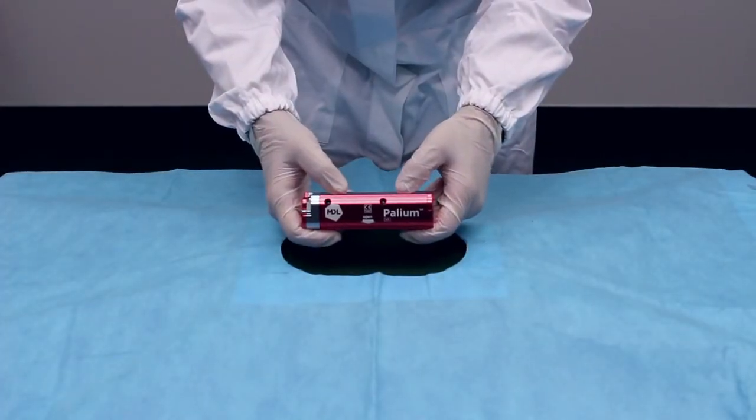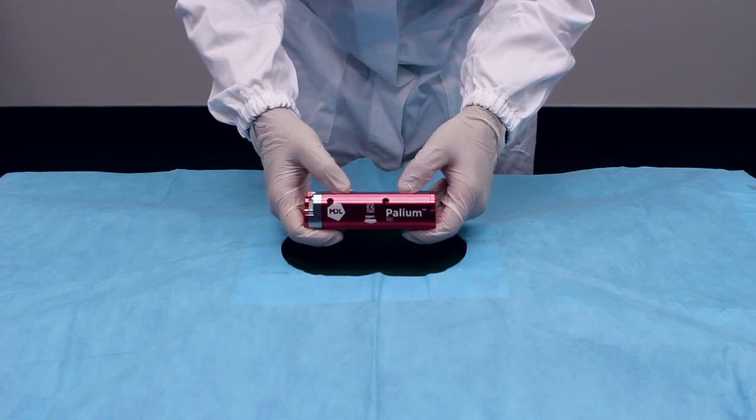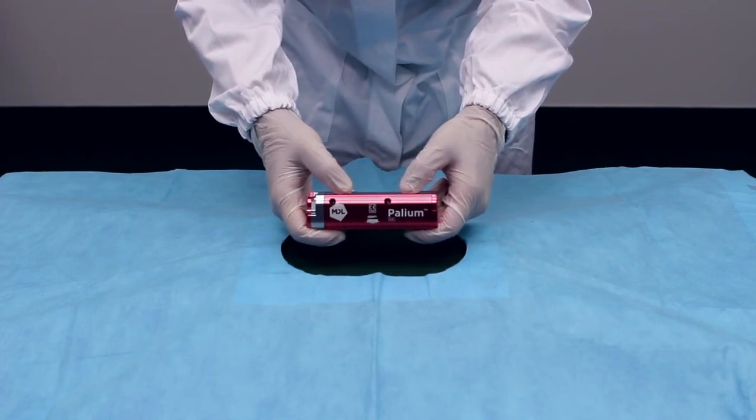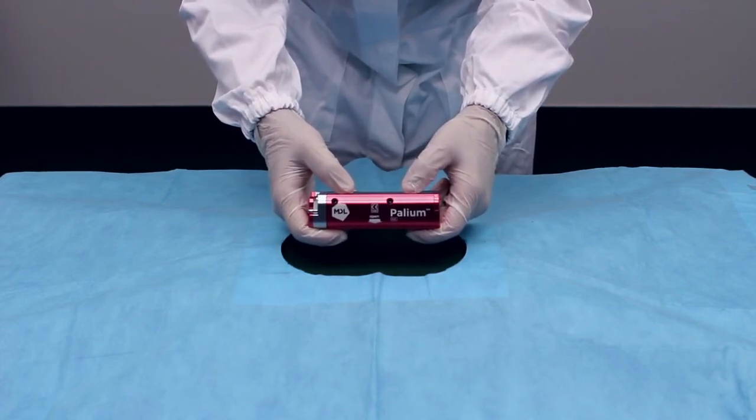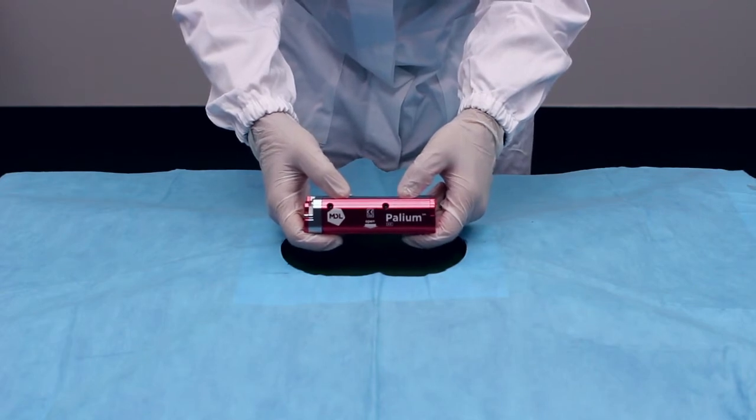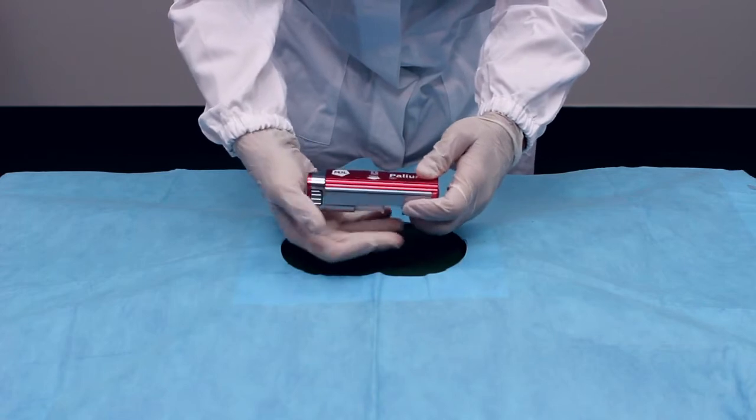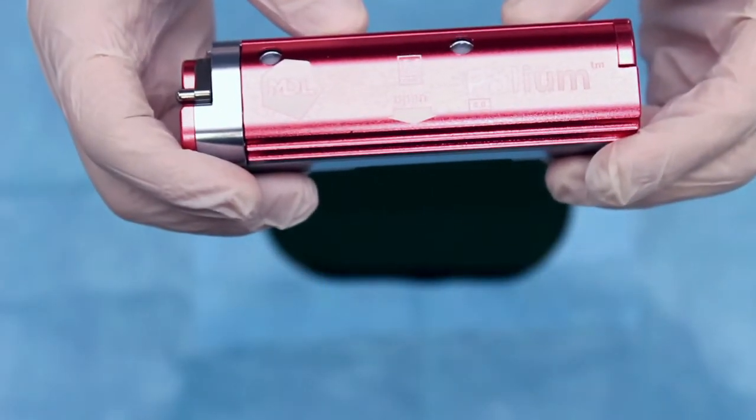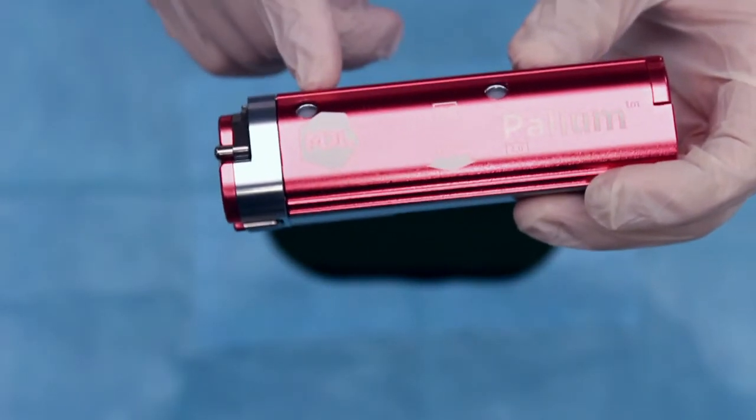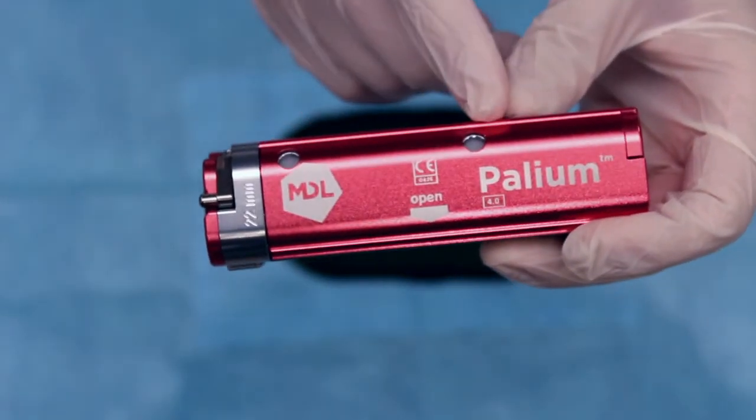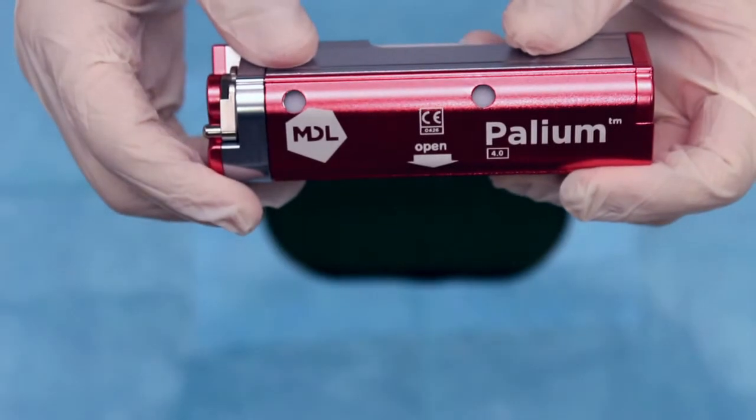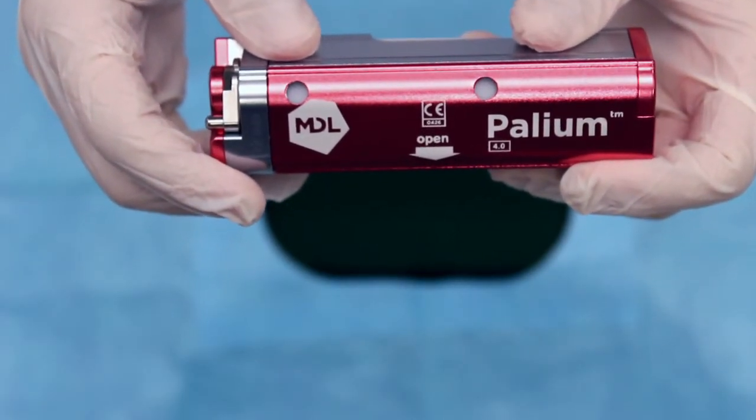To correctly use the device and ensure a safe and successful biopsy, please make sure to follow these instructions. Arm the loading handle twice to prepare the device for insertion. You can ensure that the device is fully loaded by looking at the two holes on the lid. If they are both white, the Palium gun is loaded with the safety automatically on.